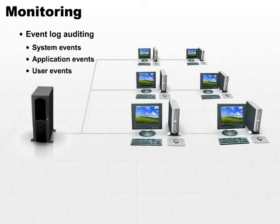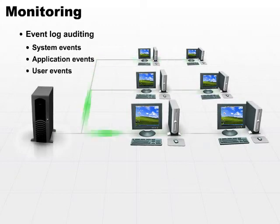First step in event log auditing is know your system and know what a regular log looks like. Sometimes that's pretty boring. You want to automate the process as much as possible so that you'll be able to look at unusual activity and pick it out almost immediately.